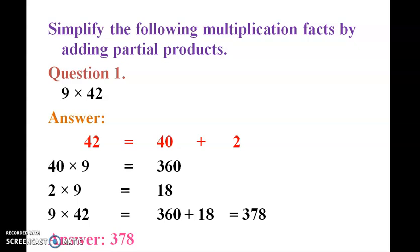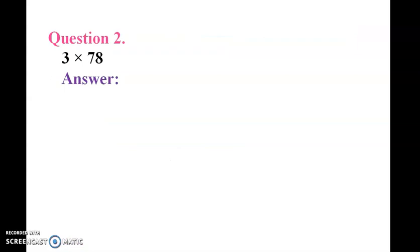Question 2: 3 into 78. So 70 plus 8. 78 is 70 plus 8. So we can take the answer to that.